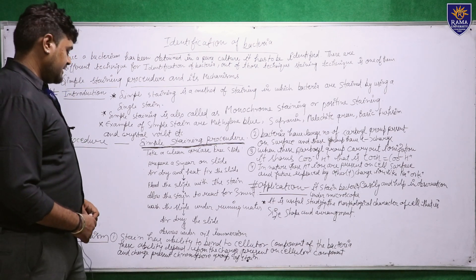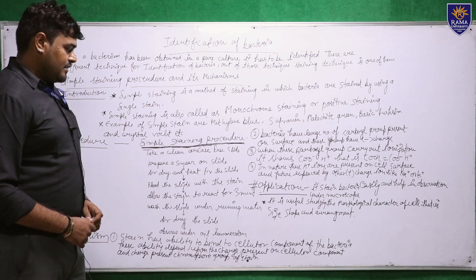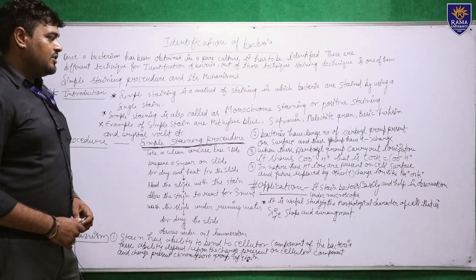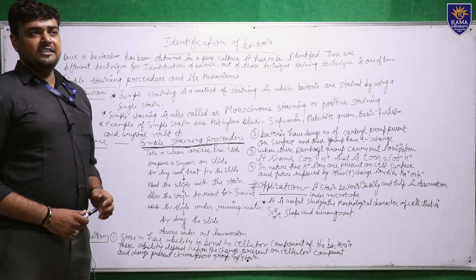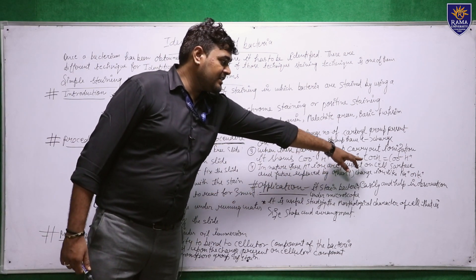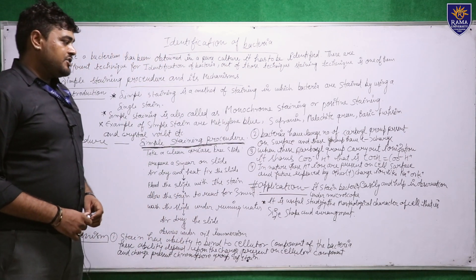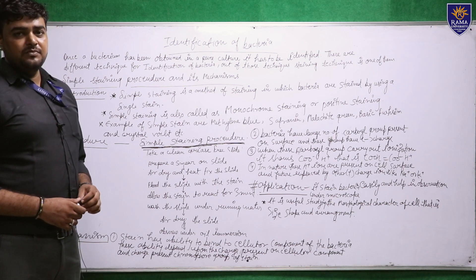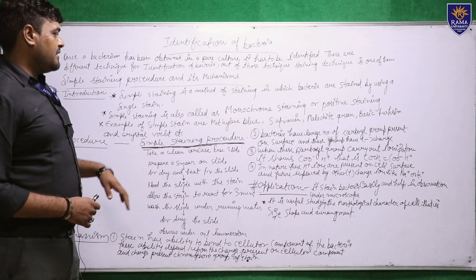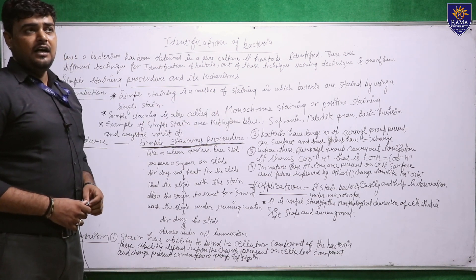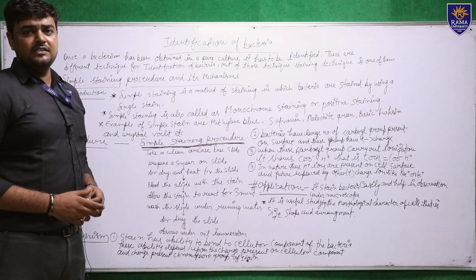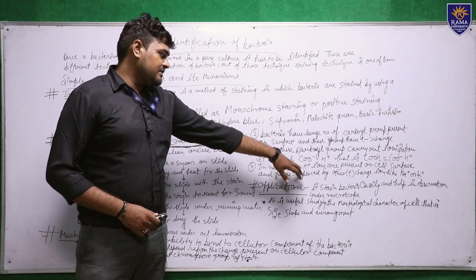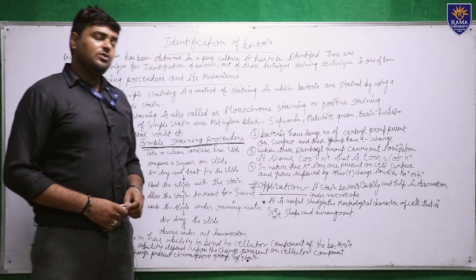The mechanism of simple staining works as follows. The cellular components of bacteria have a number of carboxyl groups on their surface, and these groups carry a negative charge. When the carboxyl group undergoes ionization, the COOH group breaks down into COO⁻ and H⁺. These H⁺ ions on the cell surface get replaced by other positive charge ions like potassium and sodium.